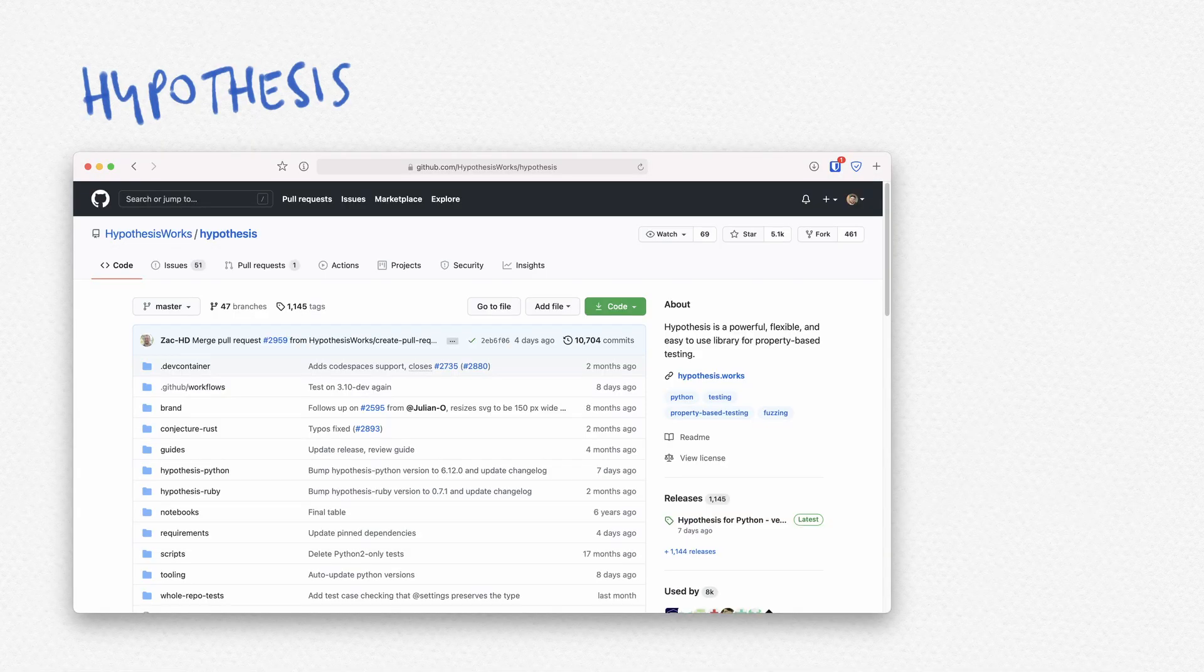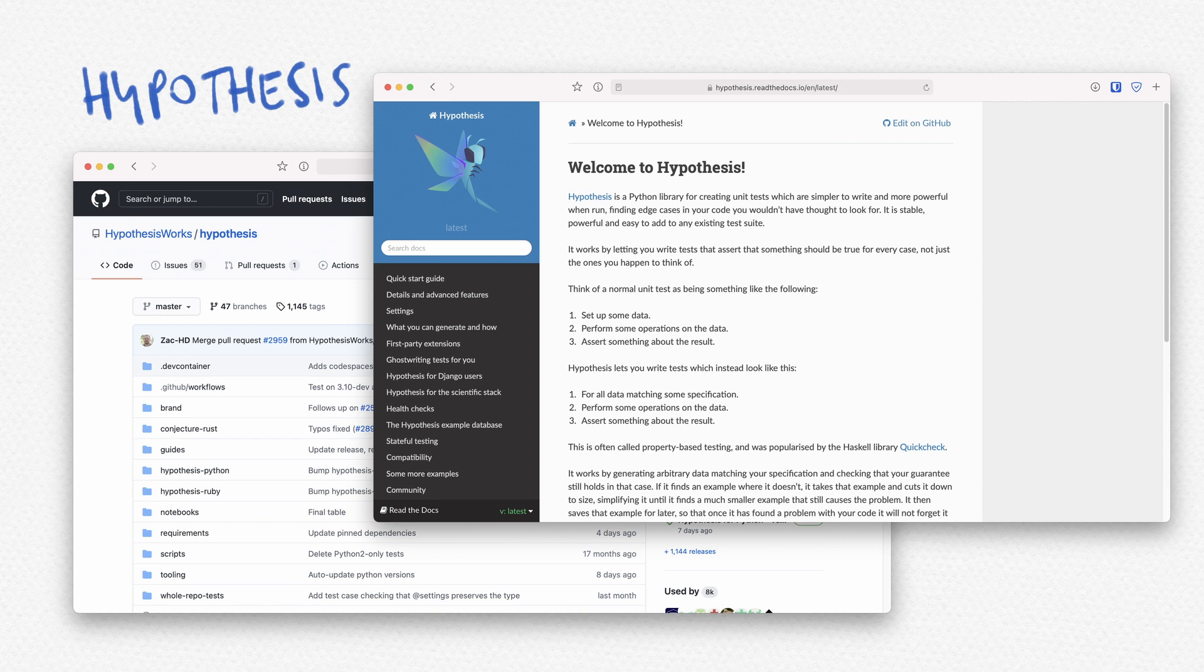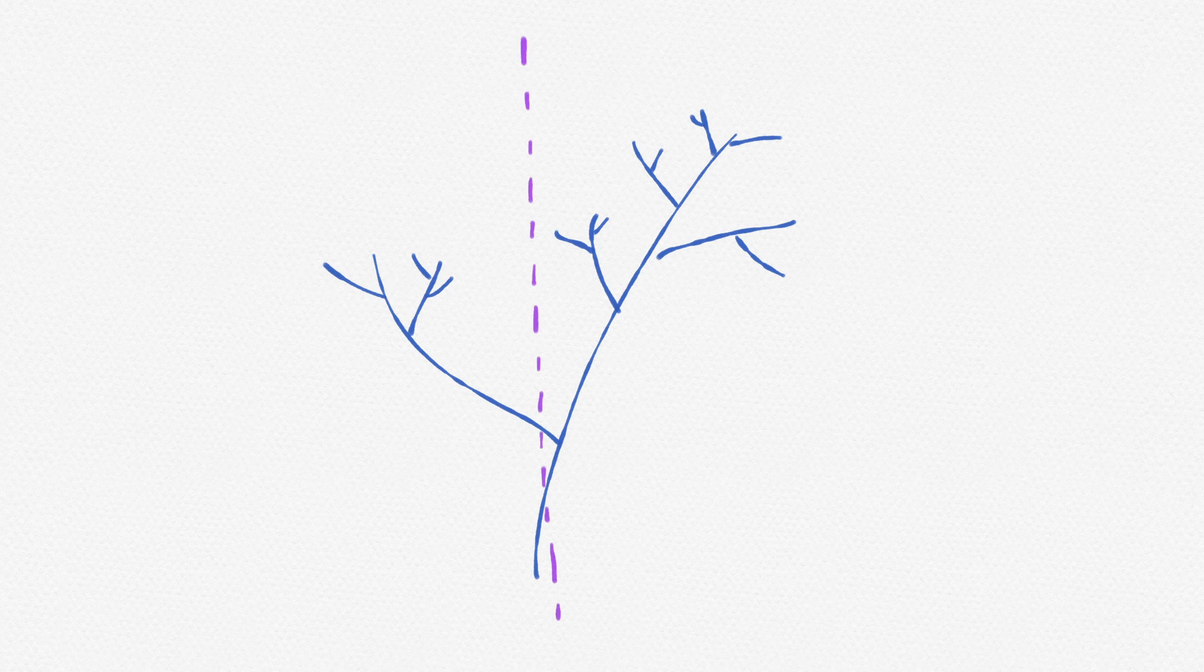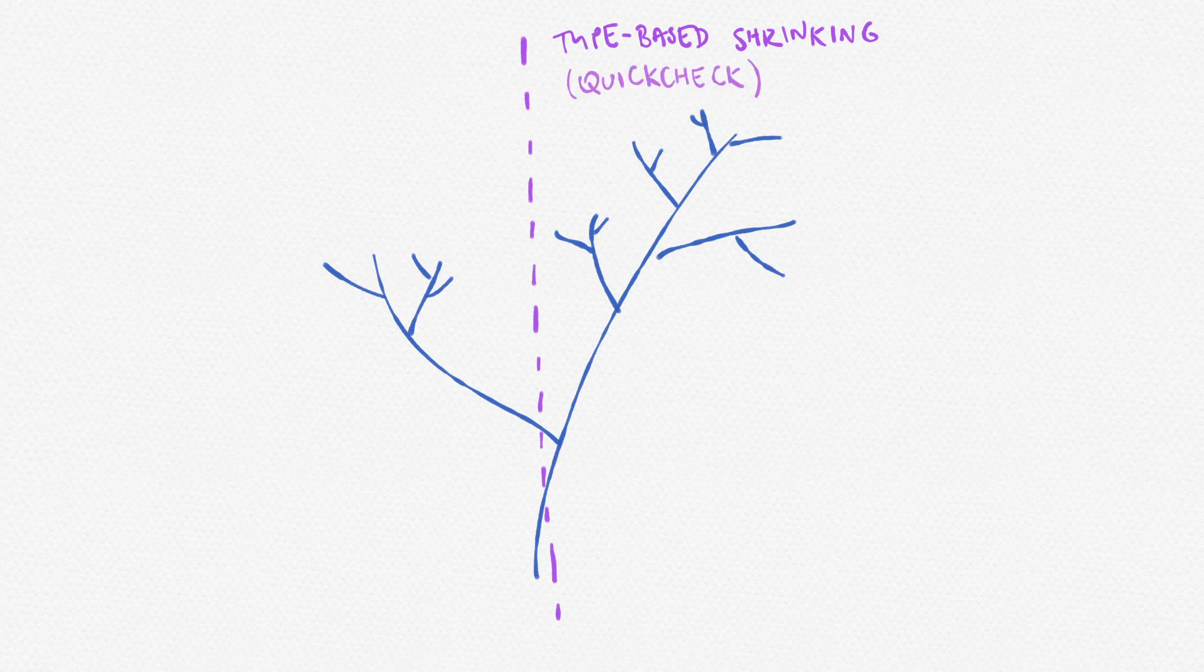We will be basing our library on the ideas from the Python Library Hypothesis by David McIver. Why is this significant? Well, simply put there are two schools or families of property based testing tools.